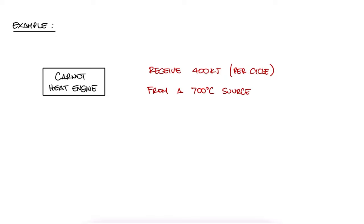A Carnot heat engine receives 400 kJ of heat per cycle from a source of 700 degrees Celsius and rejects heat to a source at 20 degrees Celsius. What is the efficiency and what is the heat out per cycle?